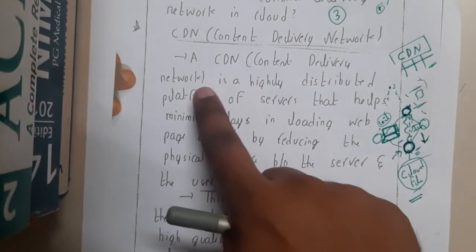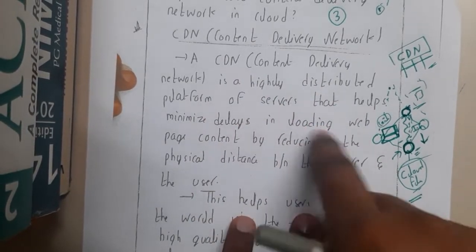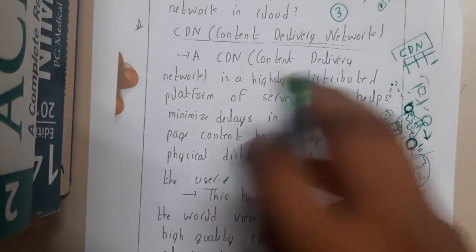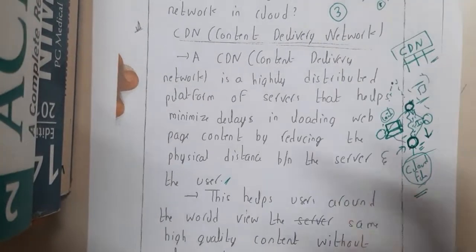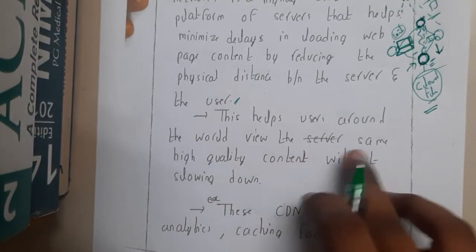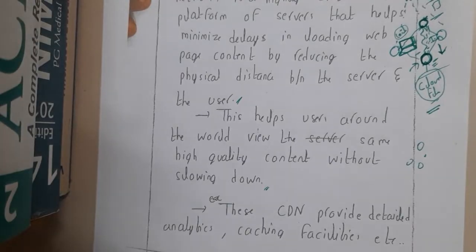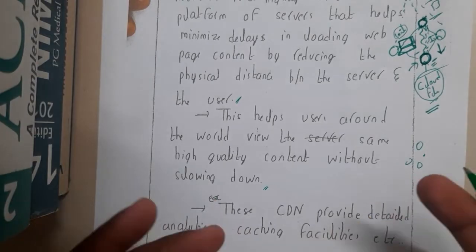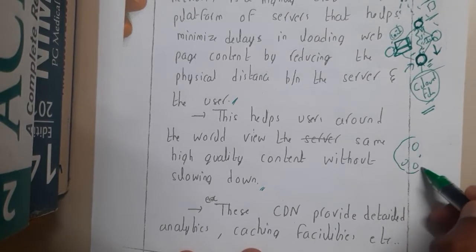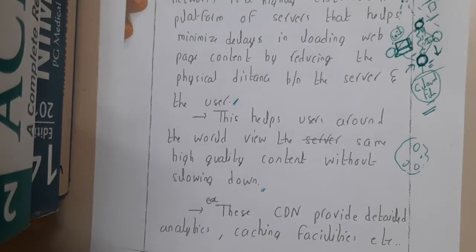A CDN or Content Delivery Network is a highly distributed platform of servers that helps minimize delay in loading web page content by reducing the physical distances. This helps users around the world view the same high-quality content without slowing down. If you replicate your data at hundreds of servers all over the world, your data will load within seconds — that is the power of CDN. It's a really cheap and efficient service.